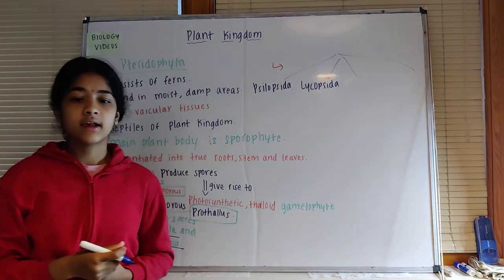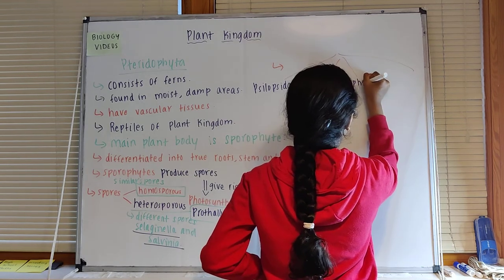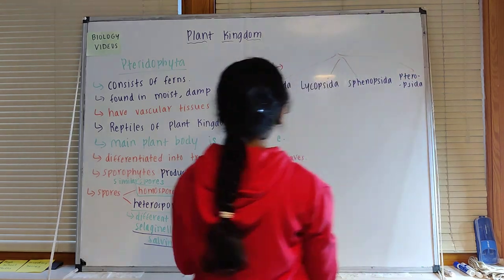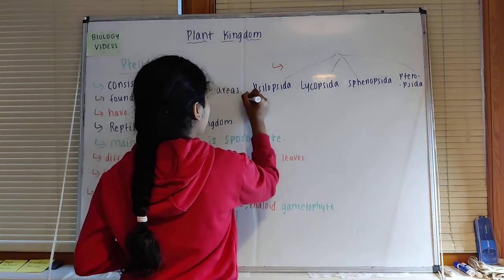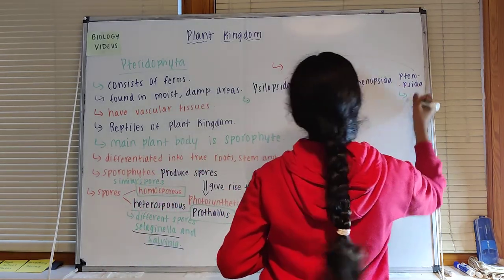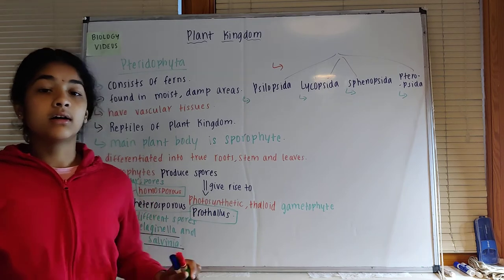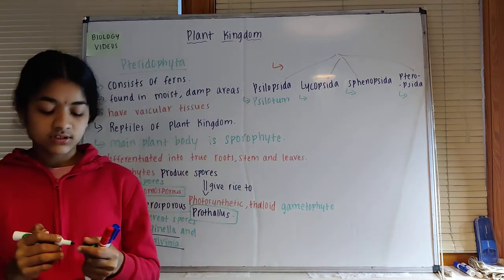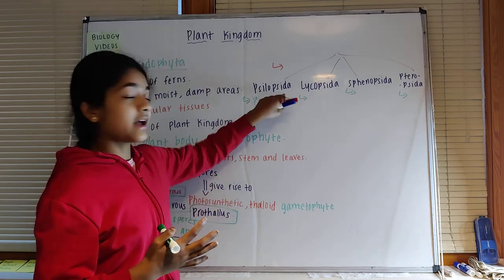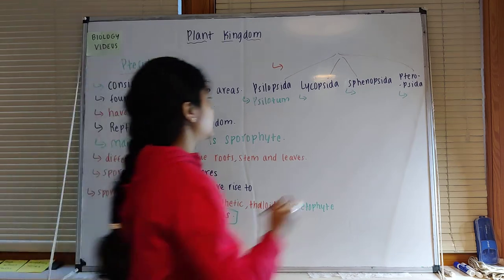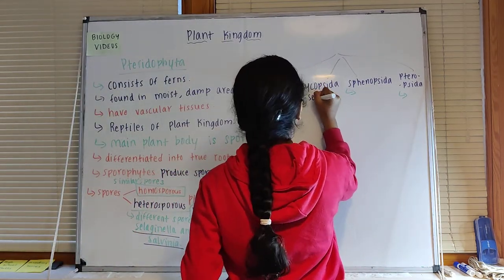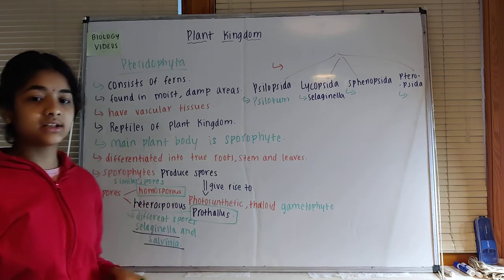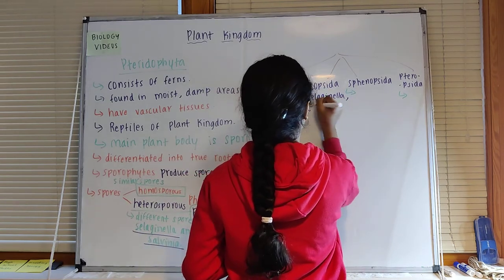Pteridophytes can be divided into four categories: Psilopsida, Lycopsida, Sphenopsida, and Pteropsida. Psilopsida includes the pteridophyte Psilotum. Lycopsida includes two pteridophytes: Selaginella, which shows the heterosporous condition, and Lycopodium.